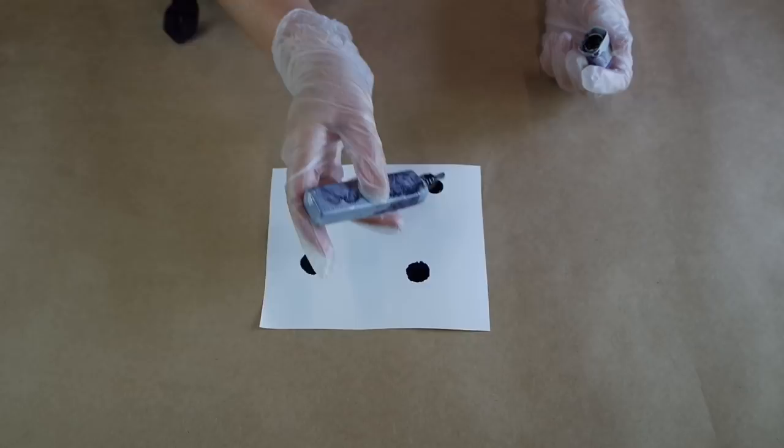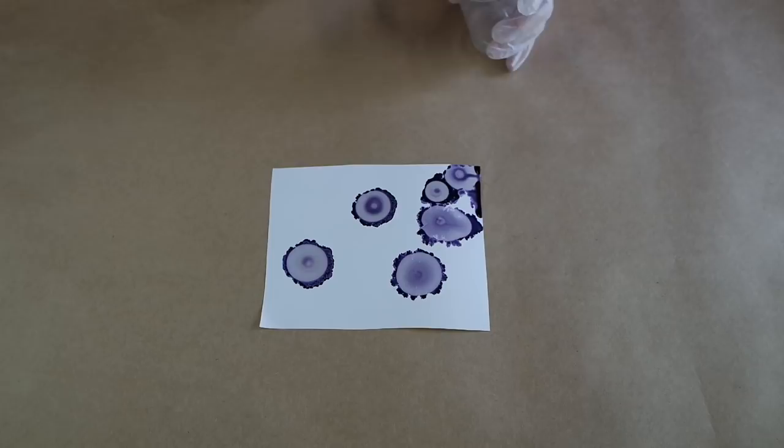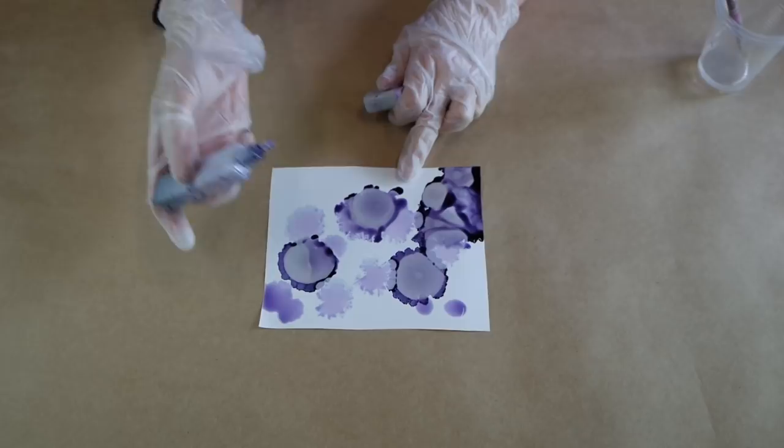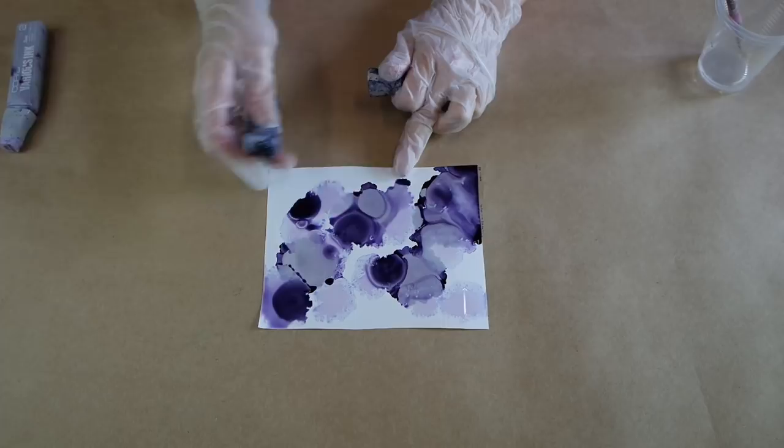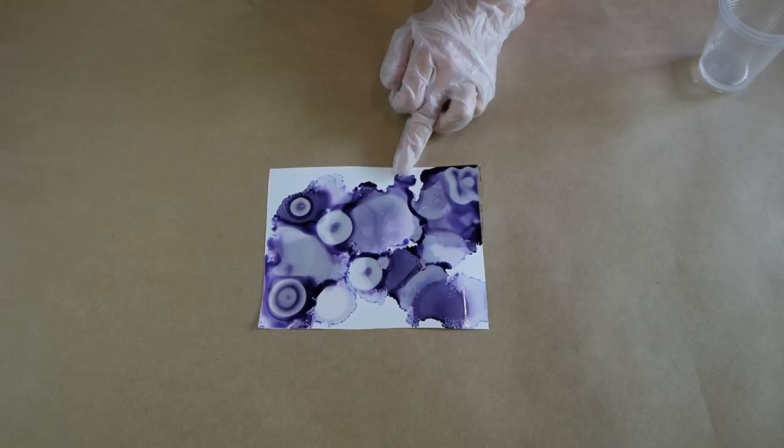Alcohol ink art is super simple and really easy. I'm going to show you how to use a few different techniques to create different styles. On my piece of yupo paper, I've just dropped down some of my alcohol inks, and then on top with my pure alcohol and my paintbrush, I'm dropping the pure alcohol on top of the inks. Then I'm just repeating the process and creating the pattern that I'm after.